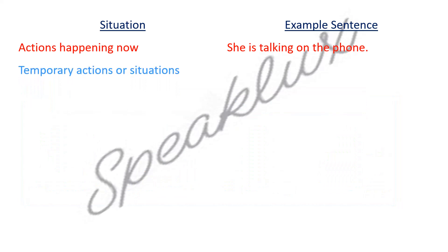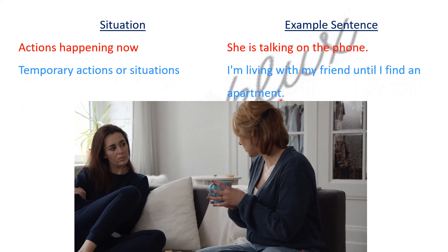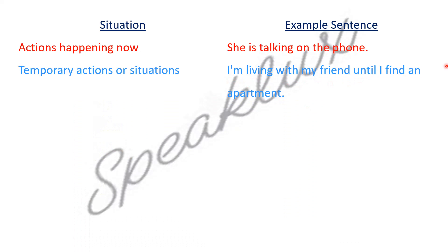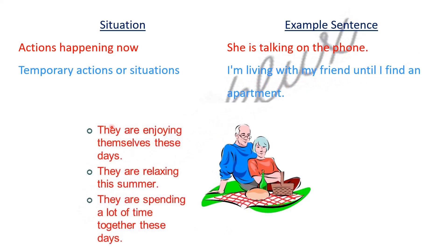Let's see another one and that is temporary actions or situations. If there is any action which will be for a little time, but we have a time specified, then we will define it in the Present Continuous. For example, I am living with my friend until I find an apartment. In this sentence, this is a temporary situation, so we will use Present Continuous Tense. There are many other sentences like they are enjoying themselves these days. These days we have specified a time — maybe they were very busy before, but this is our temporary action. Maybe they are going on holidays and then they will be busy. So for temporary situations, we are using Present Continuous Tense.